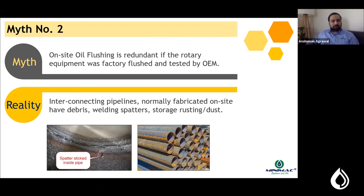Myth number two: on-site oil flushing is a redundant activity if the rotary equipment and supplied accessories were pre-flushed by the OEM in their factory. In any power plant, refinery, or manufacturing industry, multiple pipelines are laid on site between equipment and lubricating points. These pipelines may have been left in the project yard for a long time, resulting in rusted pipelines that carry rust into your system from day one.